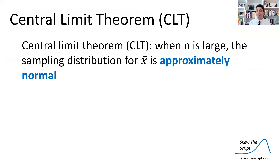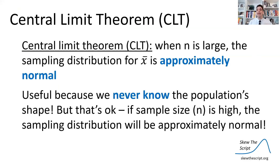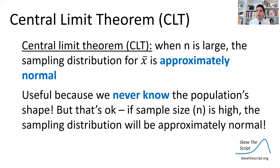The central limit theorem is the key part of this. It states that when n is large, the sampling distribution is approximately normal. That's useful because we never know the population shape — we're trying to estimate something about a population we don't fully know. But if we have a large enough sample size, we can say our sampling distribution is approximately normal and still make estimates about the mean using our sample.